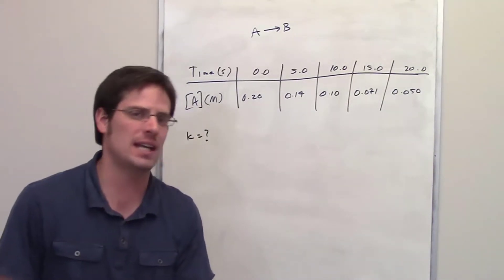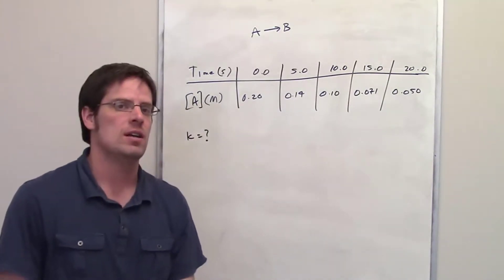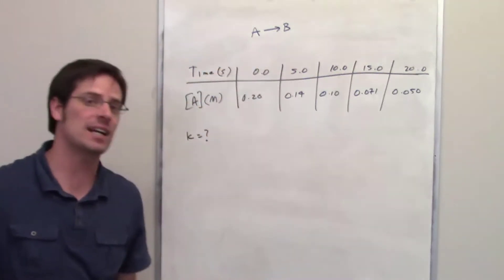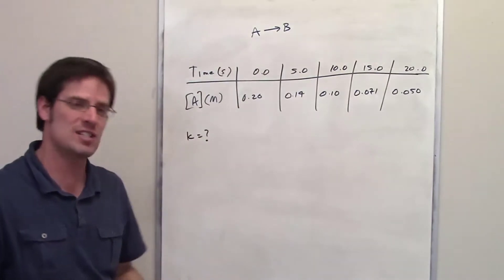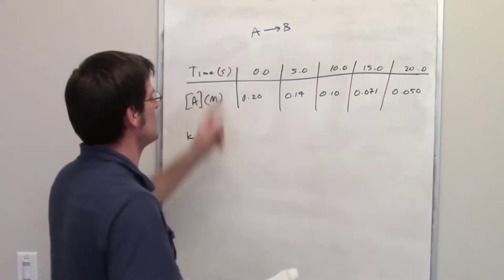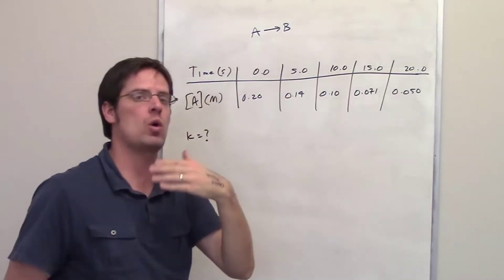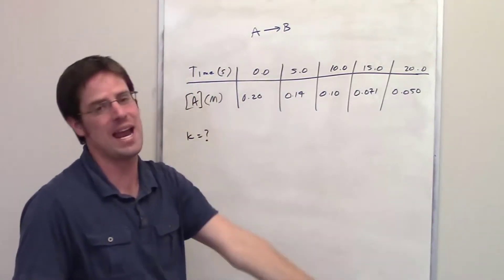Now that might sound obvious by looking at it, but it's not always true. In fact, oftentimes, our reactions that look as simple as this can be second order or third order with respect to A. For example, if you had a reaction that was second order with respect to A, it means that if you doubled the concentration of A, it would quadruple the rate of the reaction.